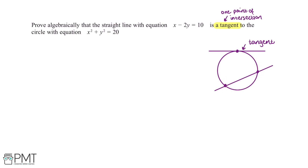What we'll need to do is substitute the straight line equation into the equation for the circle. However, the first thing we'll need to do is rearrange the line equation. If we add 2y to both sides, this gives us that x is equal to 2y plus 10.